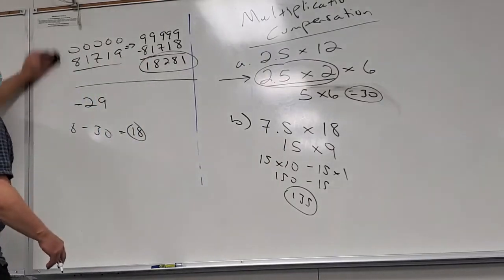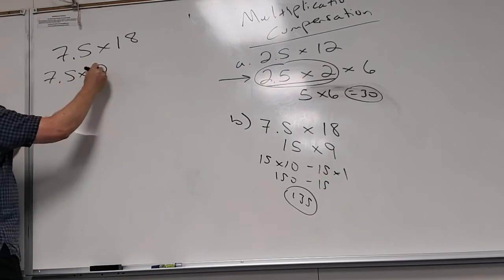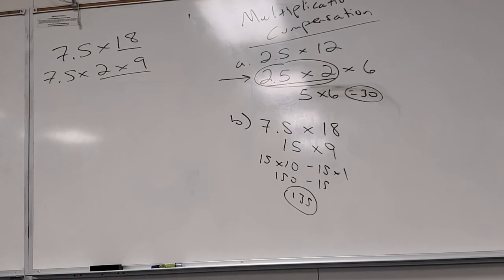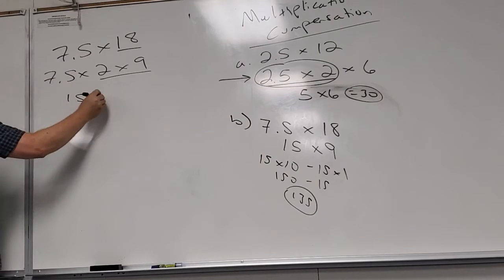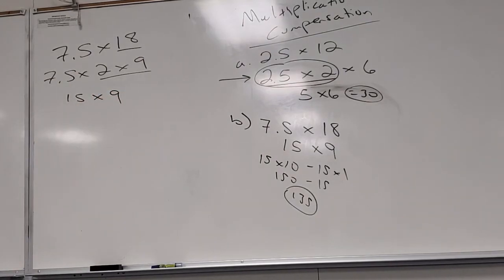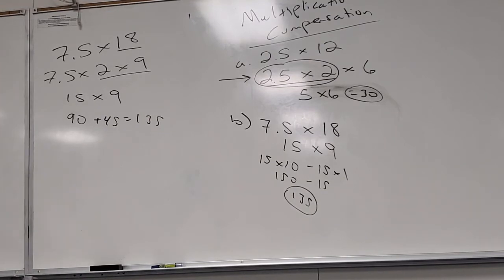Let me show every step. The factor of two can go on the other number in multiplication. The quickest way to double 7.5: double the 7 to get 14, double the 0.5 to get 1, total 15. Then 15 times 9: ten 15s minus one 15 equals 150 minus 15 equals 135. You can also do it as 10 × 9 = 90 plus 5 × 9 = 45, which also gives 135.